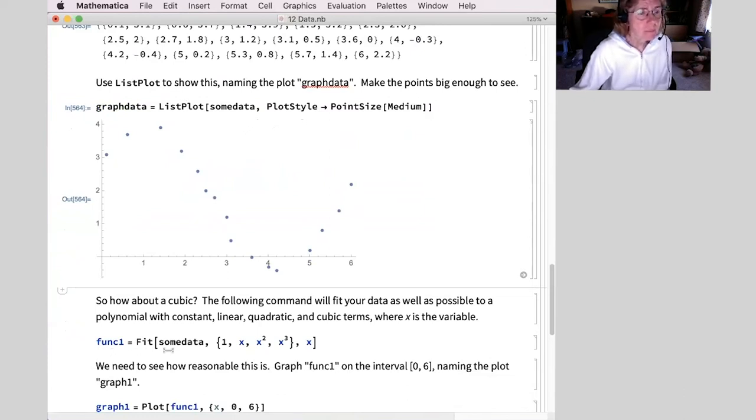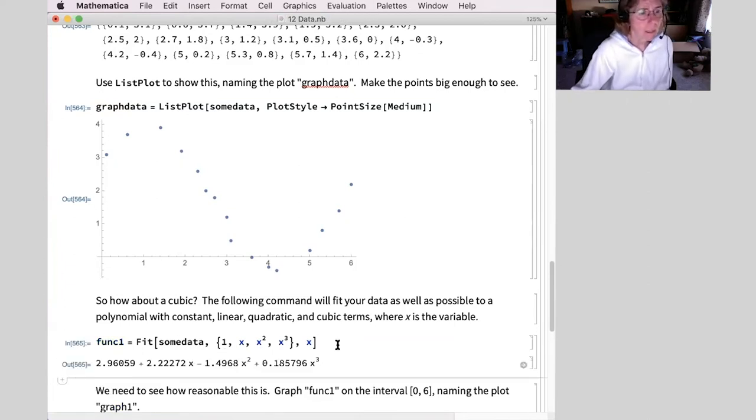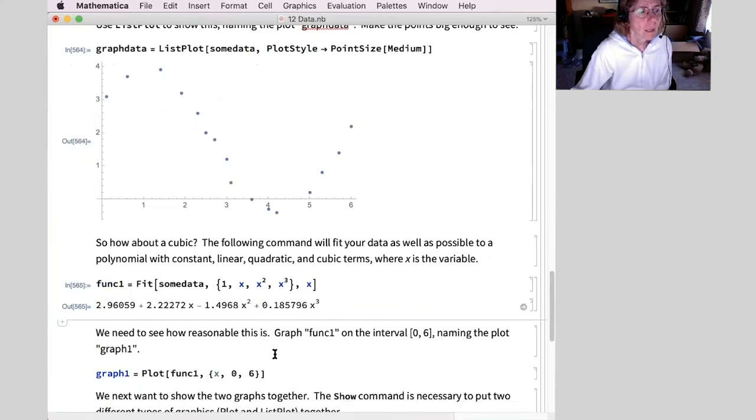Here's one fairly easy command. I'm going to call this function one is the function I get out of this. Fit. Some data. That's my list of points above. And here's a list of functions. And I'm going to create a linear combination of those functions. In other words, a constant times one plus a constant times x plus a constant times x squared, etc. And then finishing this off with x as my variable. And I get my cubic.